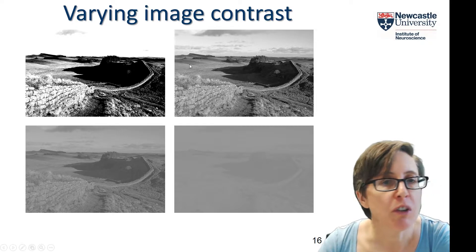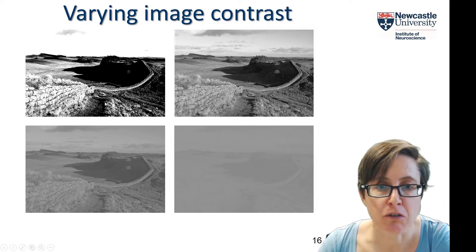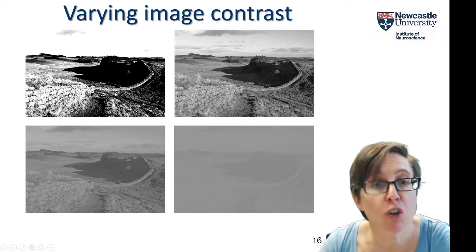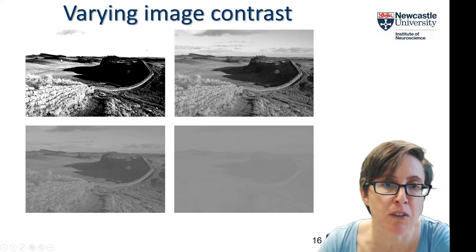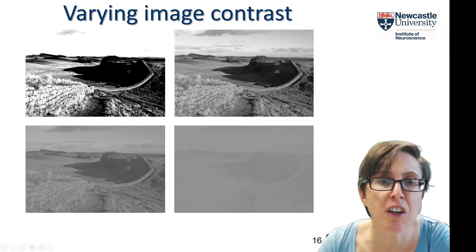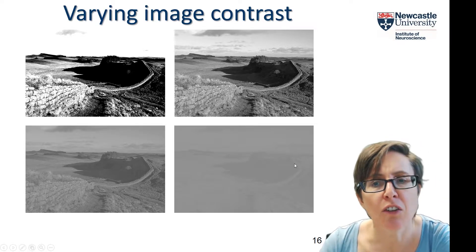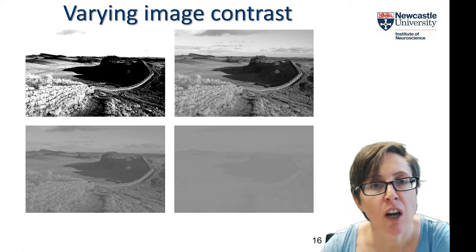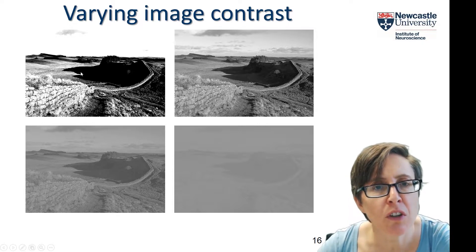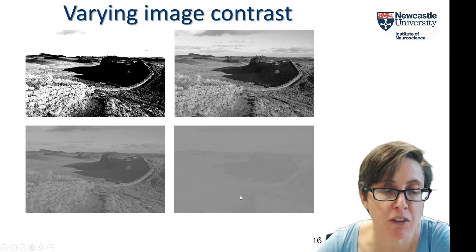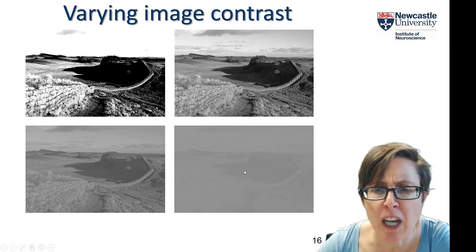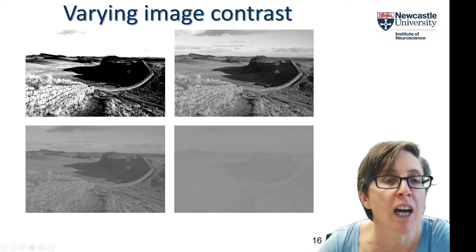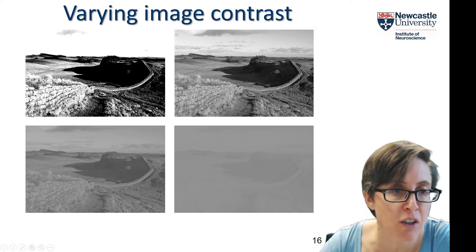I think you all have an intuitive understanding of what's meant by contrast. Here's an image of Hadrian's Wall, and I've just adjusted the contrast slider in an image editing program. This is what the program calls high contrast, and this is low contrast. You can see that it's something to do with the range of luminance values within the image — the variation between low and high luminance is rather small in the low contrast version, and much greater in the high contrast one.